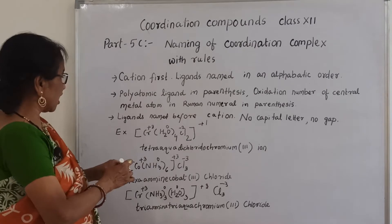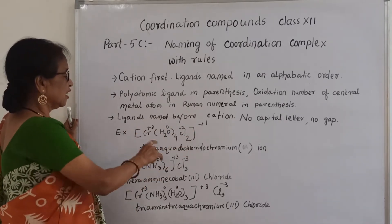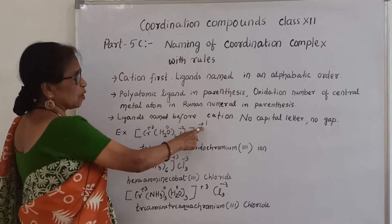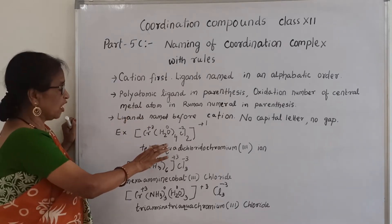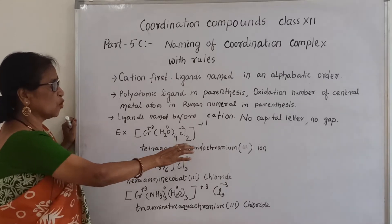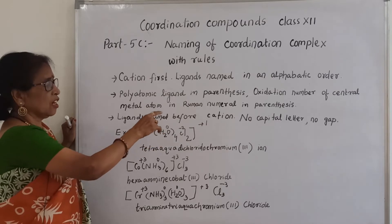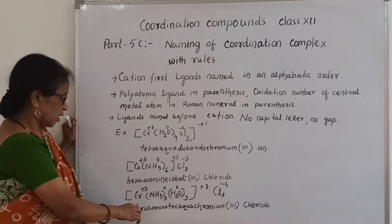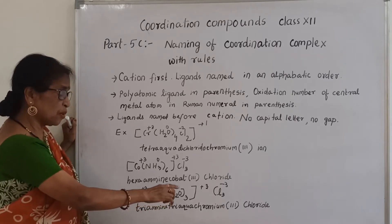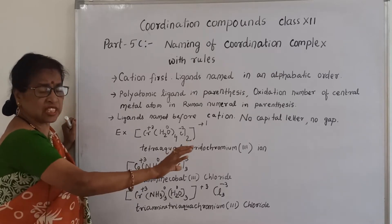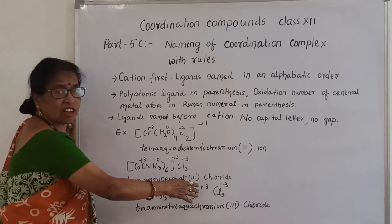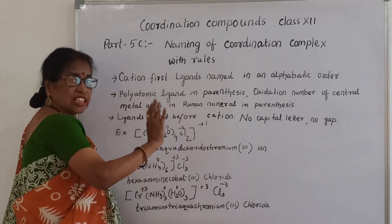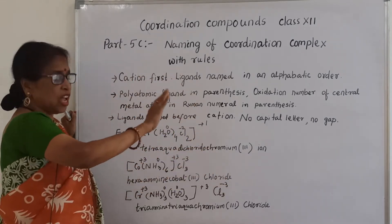To summarize naming for example 3: first, this is a cationic complex. You should calculate the charges — minus 2 from 2 chlorido and 0 for the rest — so the complex ion has +1 charge overall, meaning chromium is +3. Write: tetraaquadichloridochromium(III) ion. For example 2: hexaminecobalt(III) chloride — one gap between the complex cation and the counter ion chloride. For example 3: triamminetetraaquachromium(III) chloride.